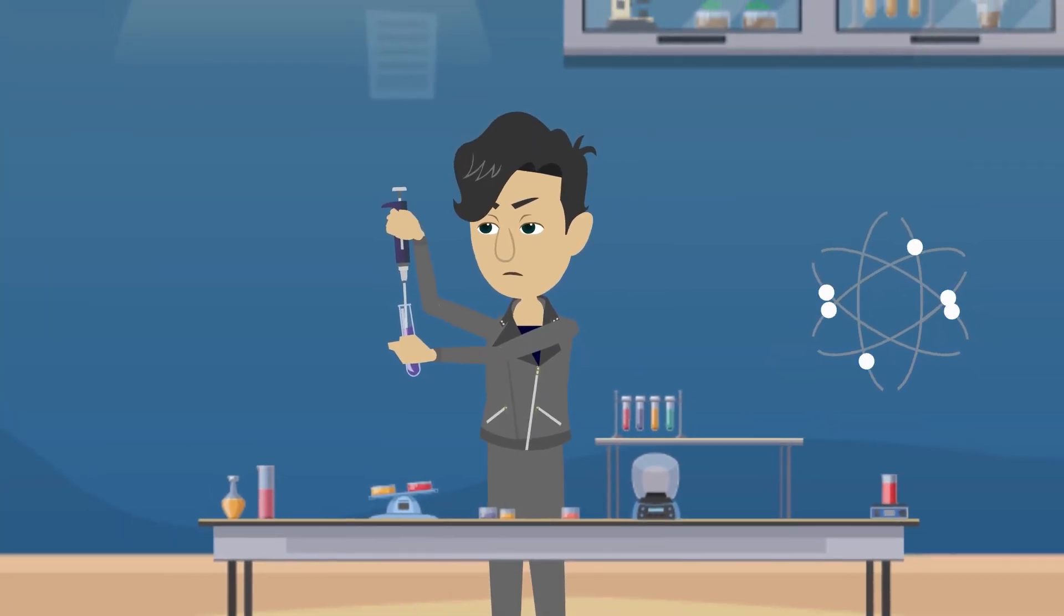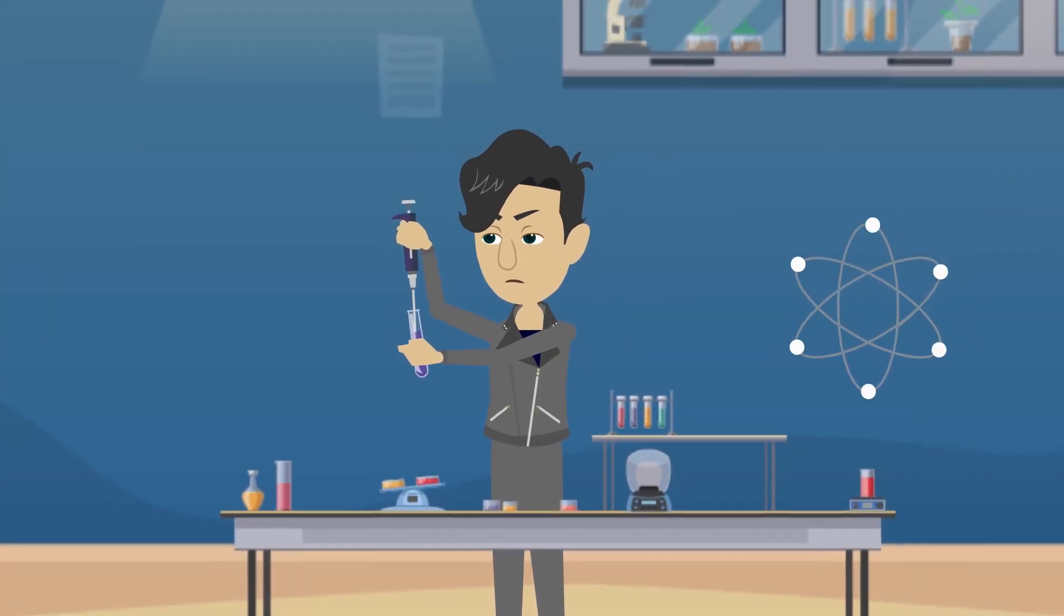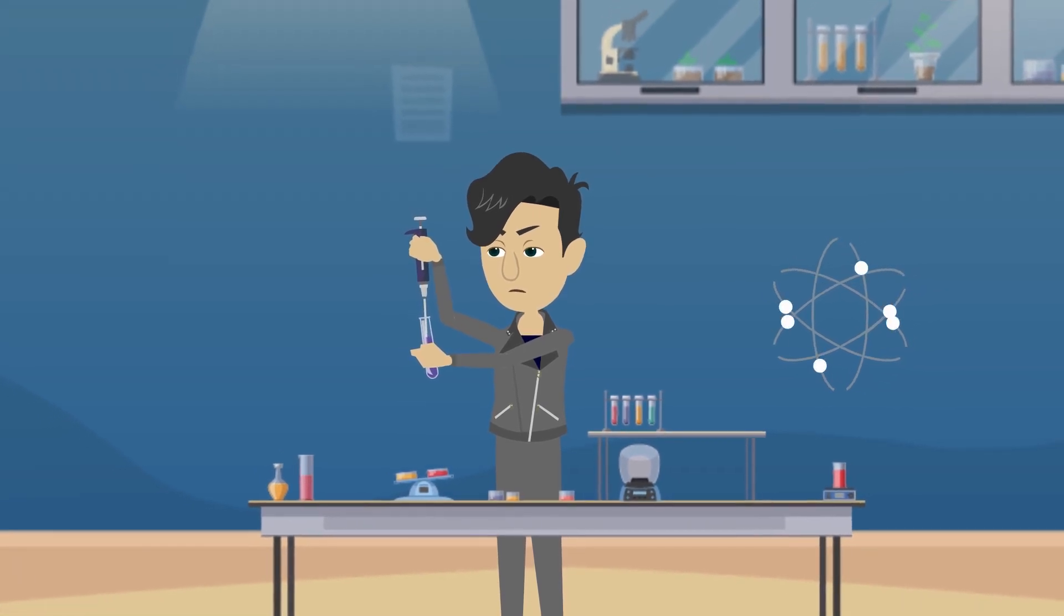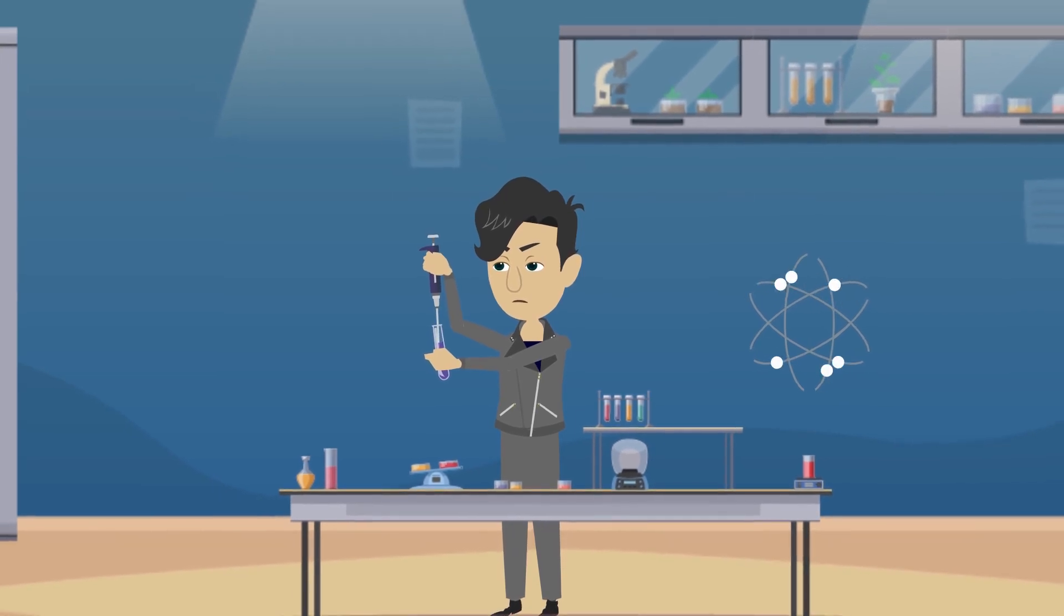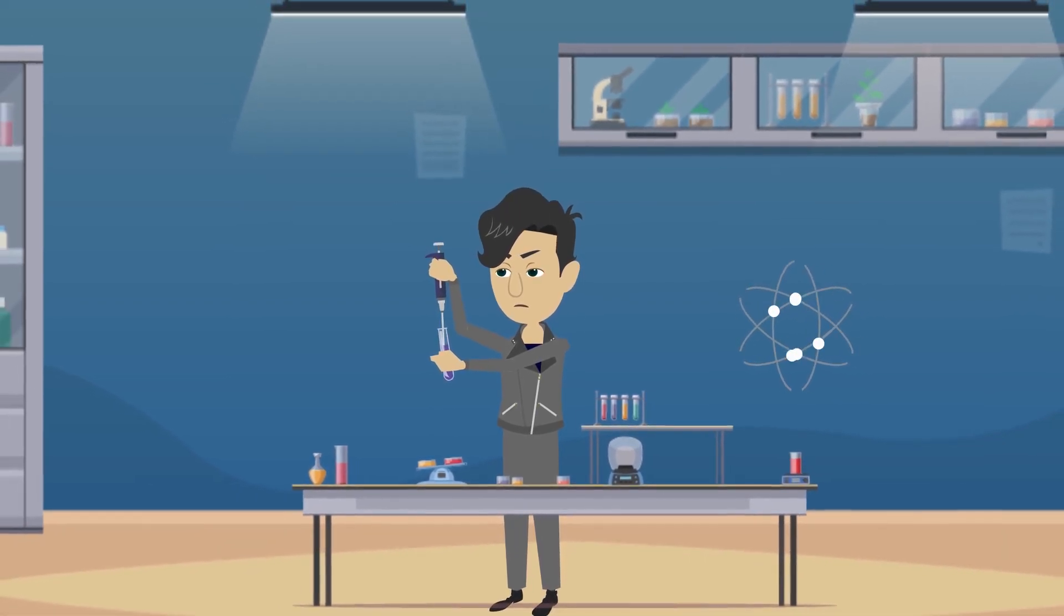Avogadro was not the only scientist in the field of molecules and gases. There were two other scientists, French chemist Joseph Gay-Lussac and English chemist John Dalton, who also explored these topics around the same time.